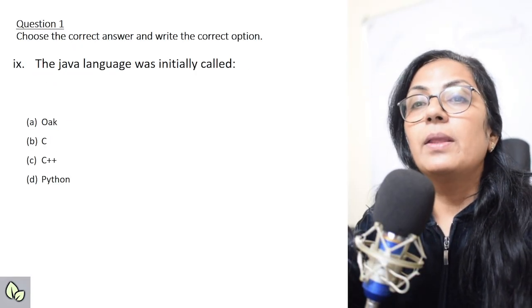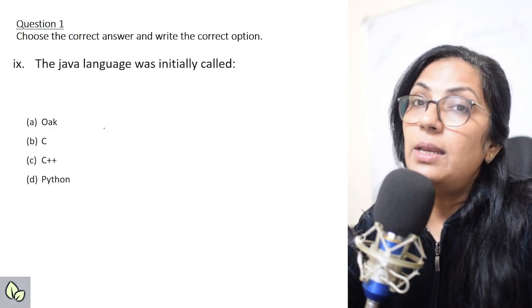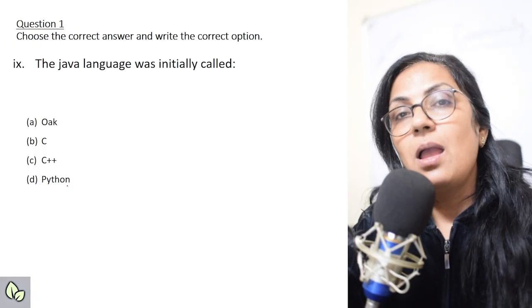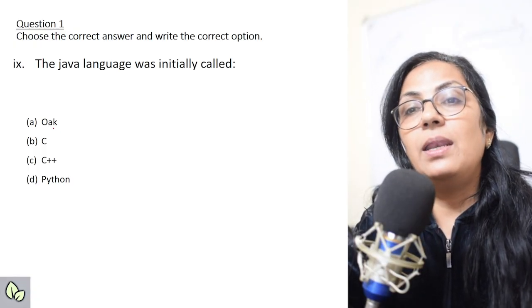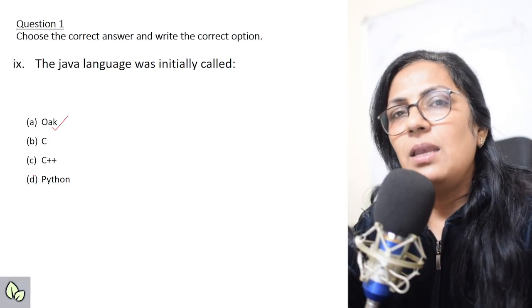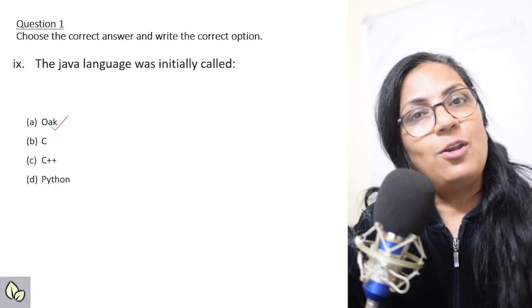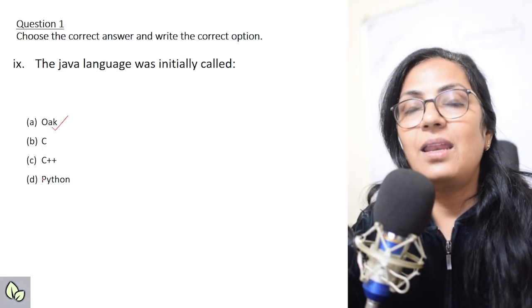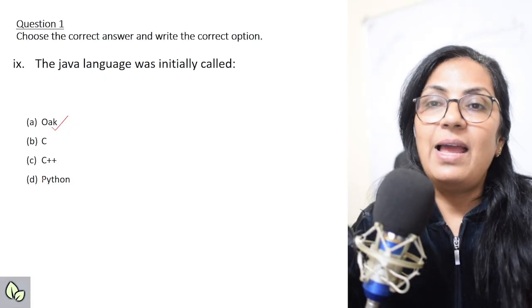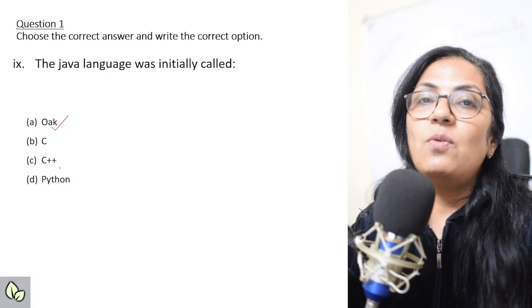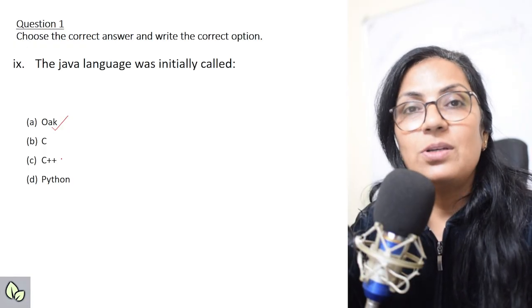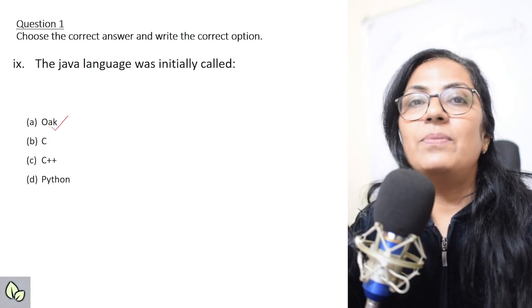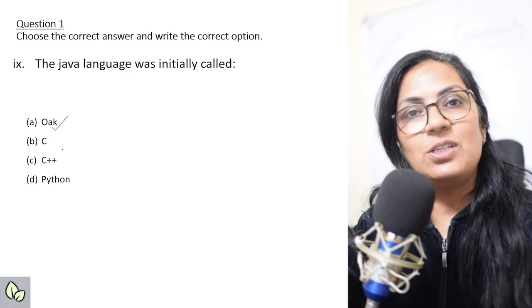The next: 'The Java language was initially called what — Oak, C, C++, or Python?' The correct answer is Oak. Oak is the name of a tree that was in front of James Gosling's office. He is the creator and developer of Java, and he named this language after the oak trees in front of his office. Later the language name was changed to Java.